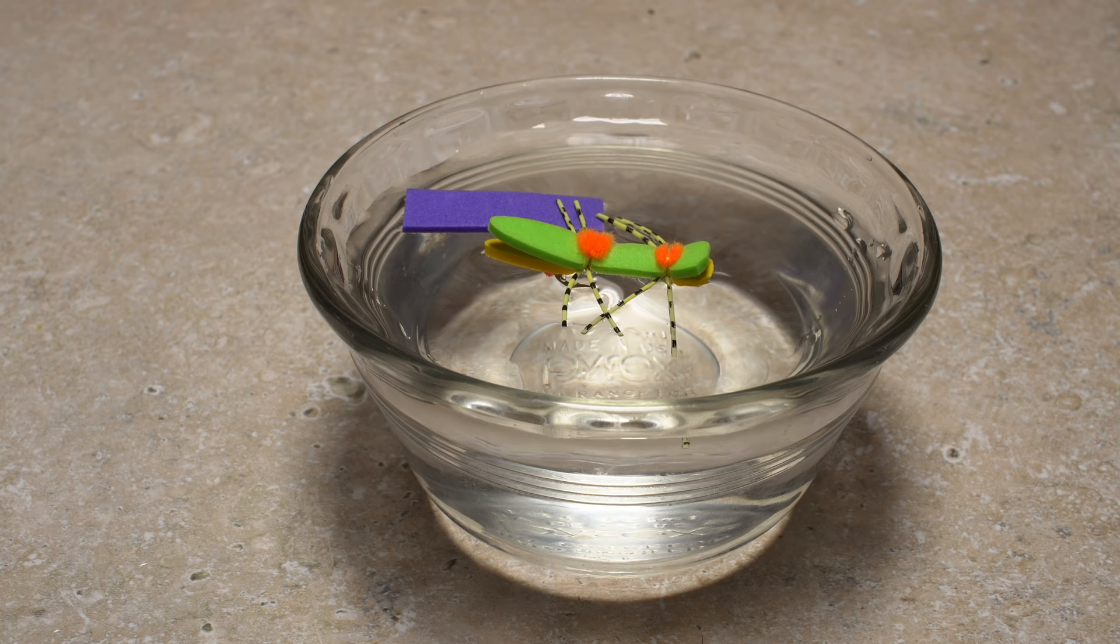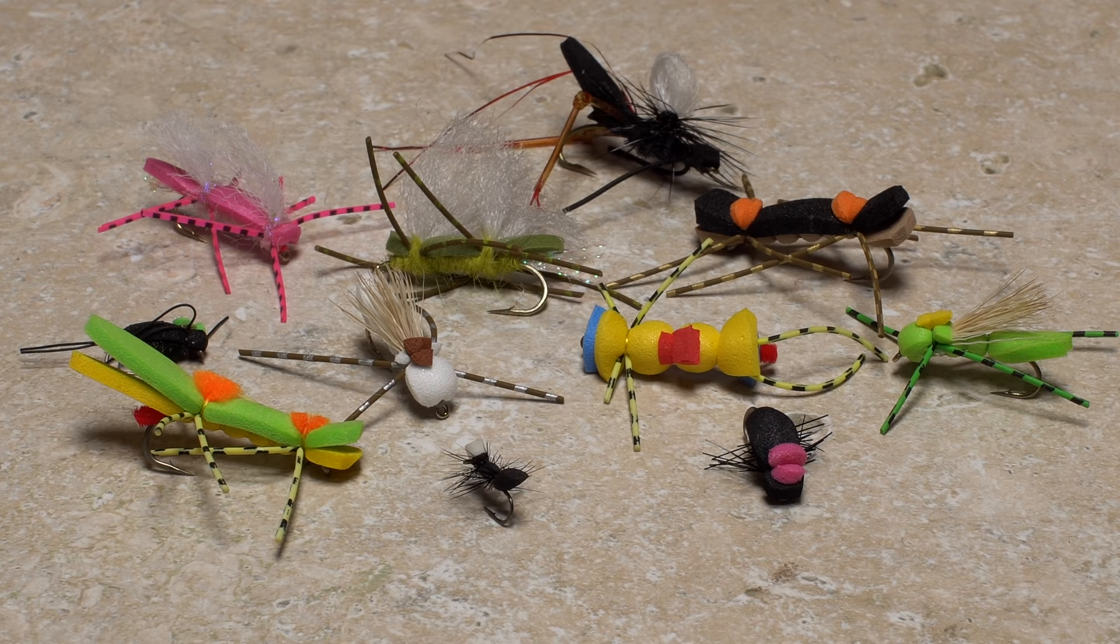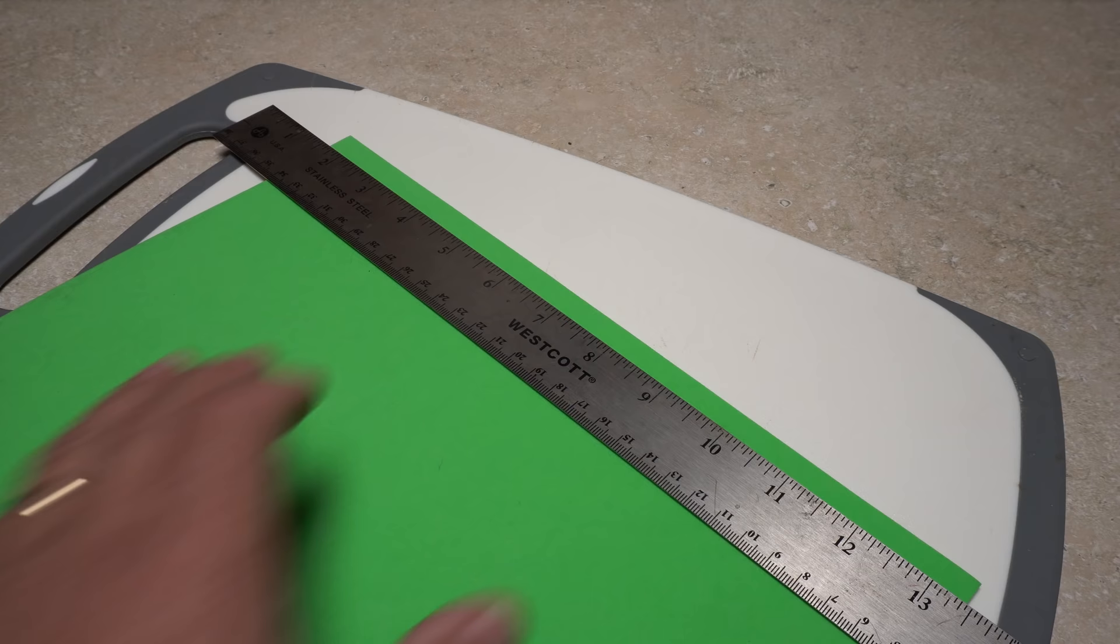Perhaps the most important attribute is the fact that foam floats, which means flies that incorporate it will also float. Because of this, foam is often used to produce flies that imitate terrestrials such as ants, beetles, crickets, and grasshoppers, but it can be incorporated into any pattern where extra flotation is needed.